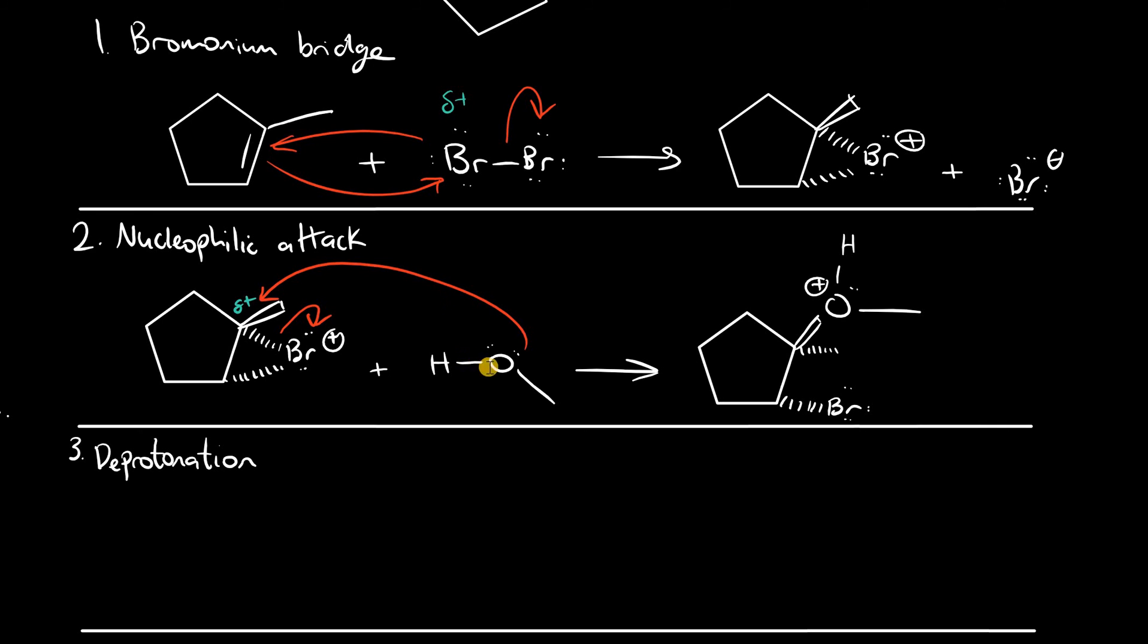So we can use that in step three to deprotonate this hydrogen, yielding a neutral charge and an anti-bromohydrin. Let's draw out the second intermediate.